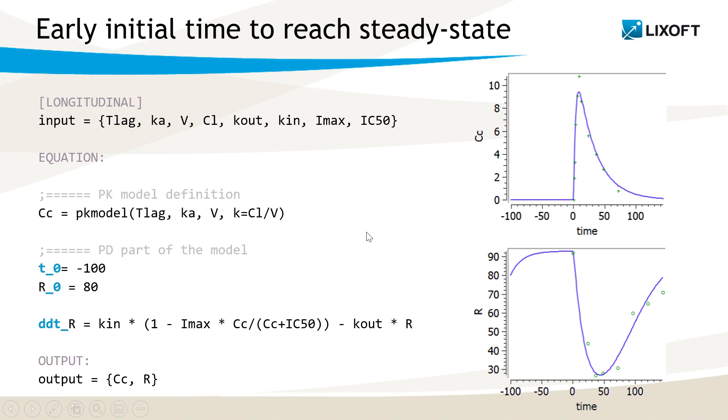PK and PD data measurements start at 0 and are displayed on these plots in green. An arbitrary initial value for the response R is given in the model, and a negative initial integration time is specified to allow the response to reach the steady state before time 0. Although here the initial steady state value could be computed analytically, this approach is useful for more complex models for which it is not feasible.